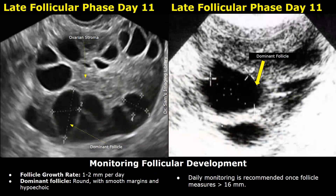These images are obtained on day eleven — now it is the late follicular phase, which spans from day eleven to thirteen or fourteen. The follicles further increase in size. In the left image, one follicle is the dominant one, and in the right image this is the dominant follicle. These images are taken from different patients.